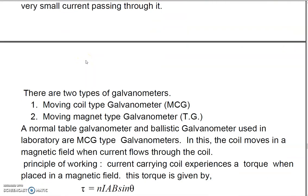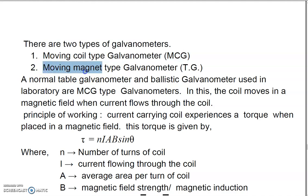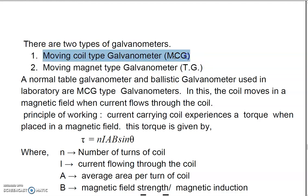There are two different types of galvanometers. One is called the moving coil type, which we regularly use in our laboratory — also called a table galvanometer because it is portable and can be placed on a table. The other type is the moving magnet type, also called a tangent galvanometer, in which the magnet moves inside the coil. Today we will talk only about the moving coil type, where the coil moves. This further has two types: pivoted type and suspended type.